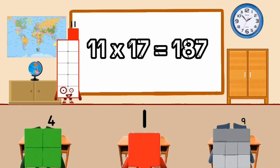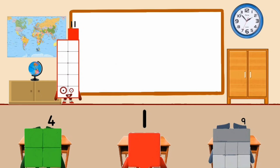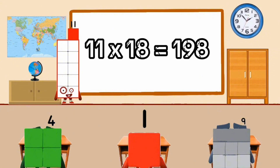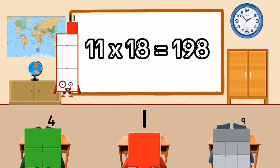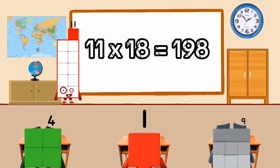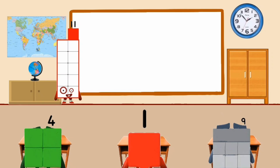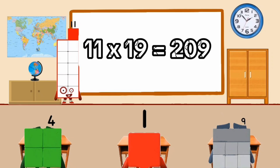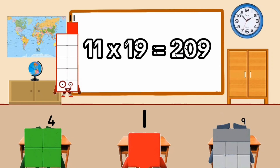11 times 17 equal 187. 11 times 18 equal 198. 11 times 19 equal 109.